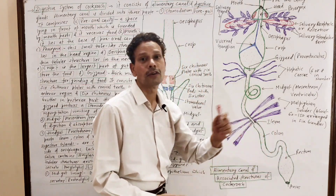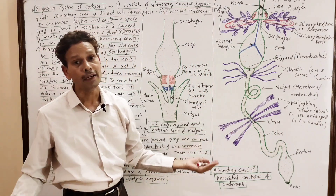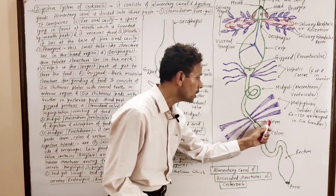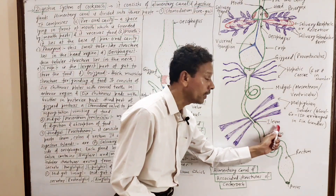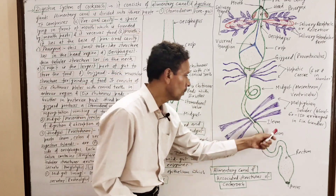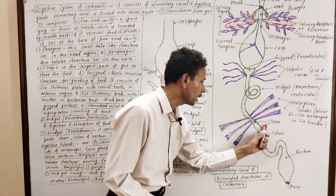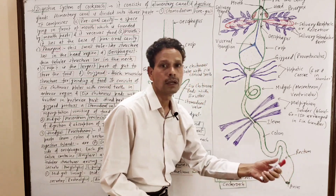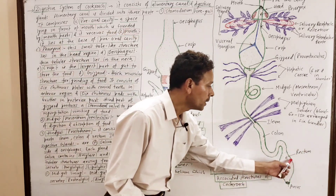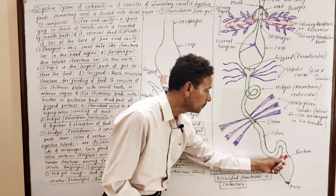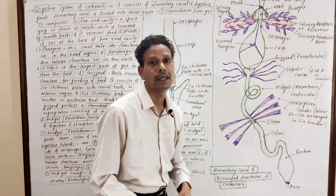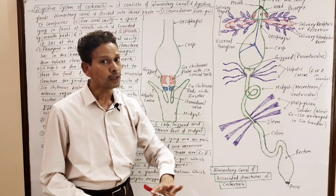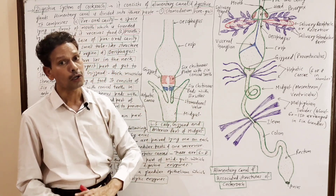The last part of the alimentary canal is the hindgut, or proctodeum. The proctodeum is further divided into three parts: ileum, colon (the coiled part), and rectum (the last wide part). The rectum opens by the anus. This is all about the alimentary canal of cockroach.